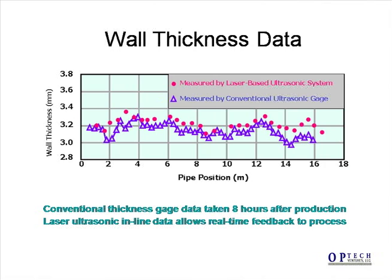Here we have plotted the data as wall thickness versus position along the 16-meter tube. The laser ultrasonic data is plotted in red circles. After the tube cooled, thickness data was taken by hand using a transducer-based thickness gauge, plotted in violet triangles. The data are in good agreement after accounting for an expected offset associated with thermal expansion.